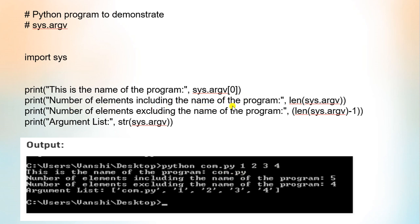The number of elements including the name of the program can be found using the len() function — len(sys.argv). The total length of argv here is 5. The number of elements excluding the name of the program is 5 minus 1, that is 4. We can display the argument list using str(sys.argv), which outputs: com.py, 1, 2, 3, 4. This is the demonstration of the sys.argv statement.